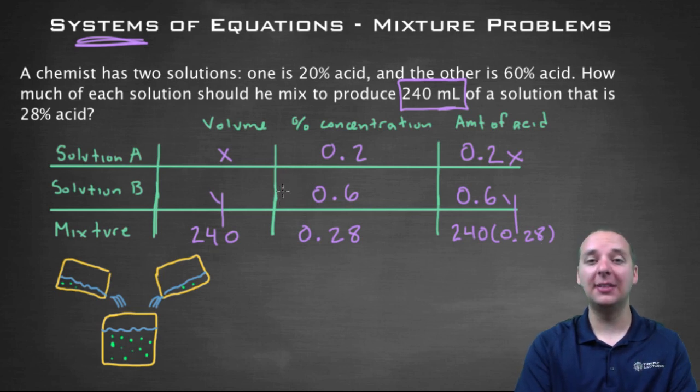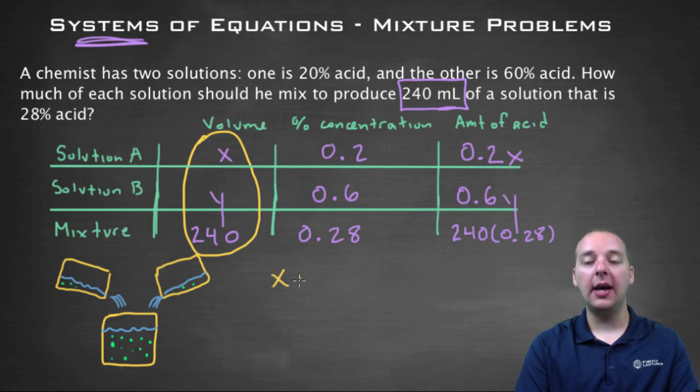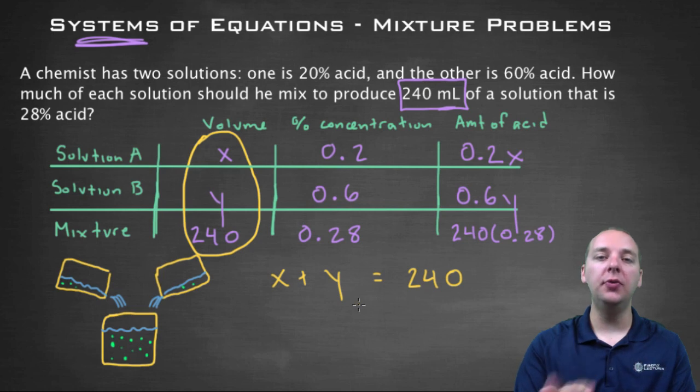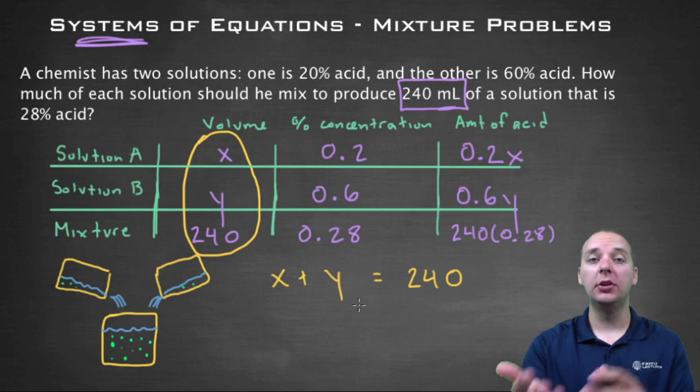Now how can we make a system out of this? How can we get some equations out of this thing? Well, I see this very simple: look at this column right here. We don't know what X is, we don't know what Y is, but together they must be 240 milliliters. So I think we can write X plus Y equals 240. But that's an equation that has two variables. That's not enough to solve for X and Y. If it just had X's or just had Y's we could solve for it, but that's two variables.